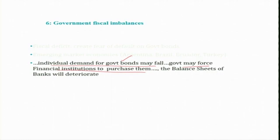Especially in many developing countries they have public sector banks and public sector financial institutions that will be forced to purchase government bonds. As a result, because these institutions are forced to purchase government bonds, that may not be their right investment decision or their correct portfolio allocation. They need to distribute funds to meet liquidity, profitability, and all these parameters. But if they are forced to invest more in government bonds, that may not be their right investment decision.